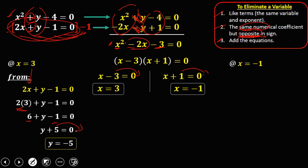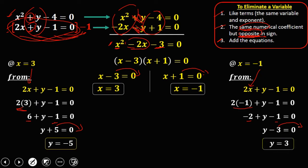Then at x equals negative 1, the same equation, substitute x, so 2 times negative 1 is negative 2. And negative 2 minus 1, that's negative 3, then transpose to solve for y, so y now is positive 3.